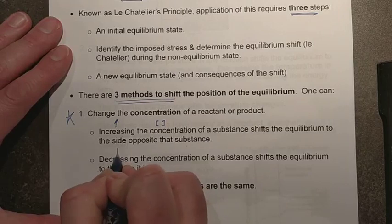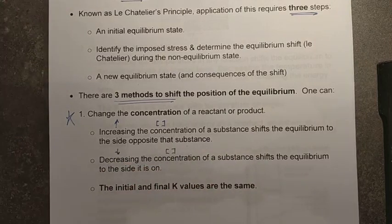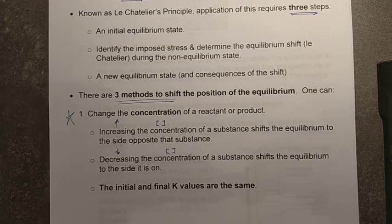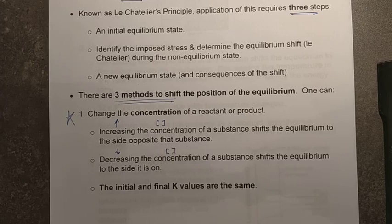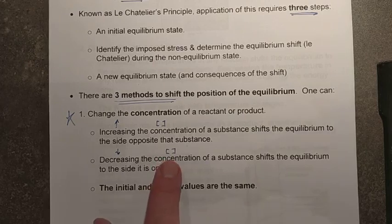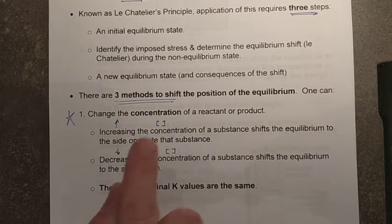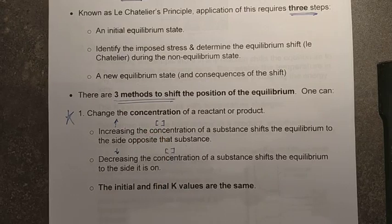If I decrease the concentration of one of these things, I will see the reaction shift towards the side where I made the stress. For example, if I have a system in equilibrium and decrease the concentration of a product, I suddenly have less product. The system doesn't like this and responds to oppose it, so the forward rate of reaction increases to produce more product. We see a shift to the side of the decreased concentration, or a shift opposite the increased concentration.